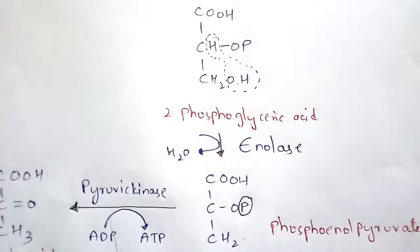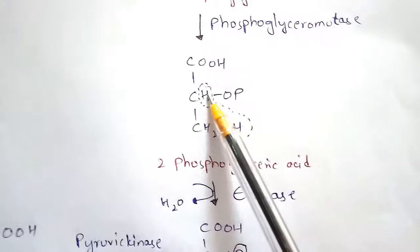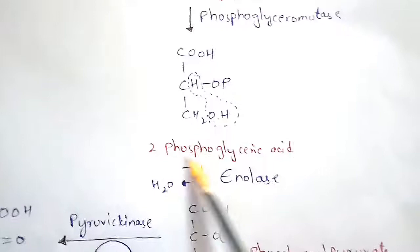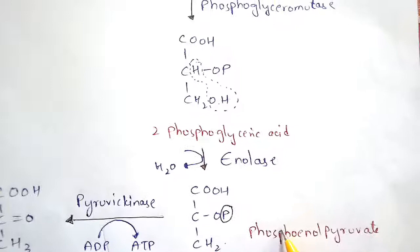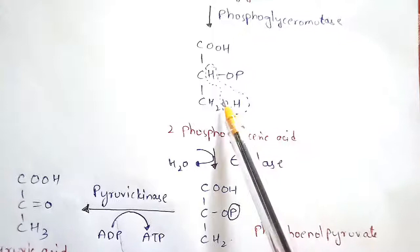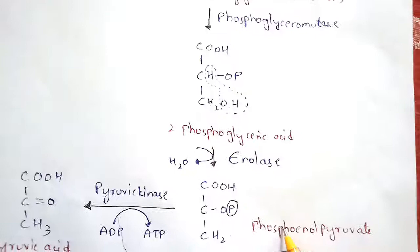2-phosphoglyceric acid will get converted to phosphoenol pyruvate (PEP) by the enzyme enolase. The H at the second carbon and the OH at the third carbon combine together and release a water molecule. The remaining structure forms phosphoenol pyruvate.